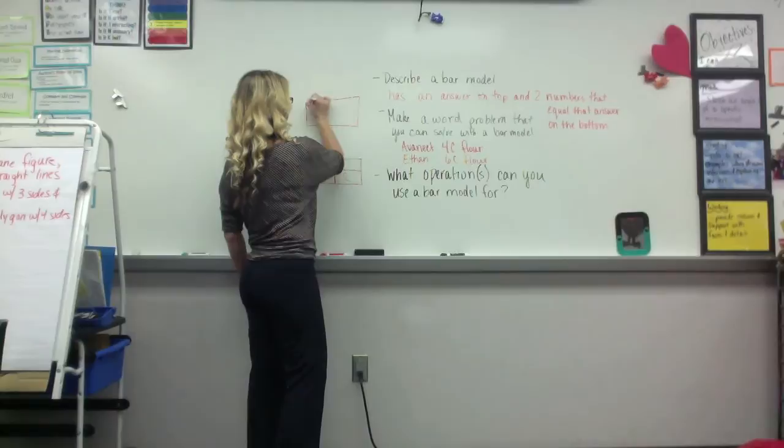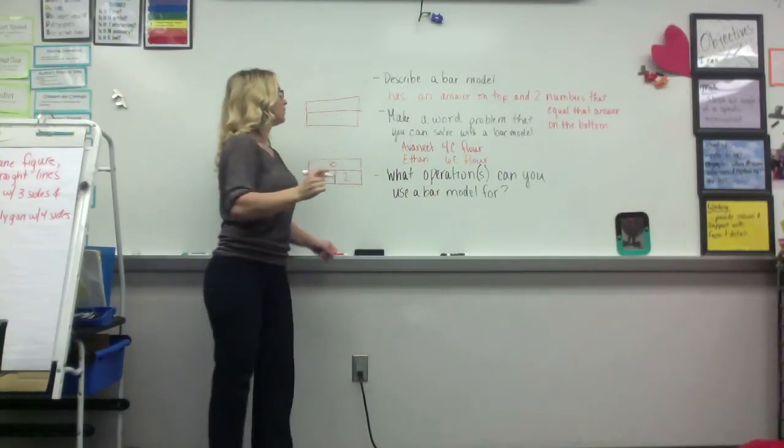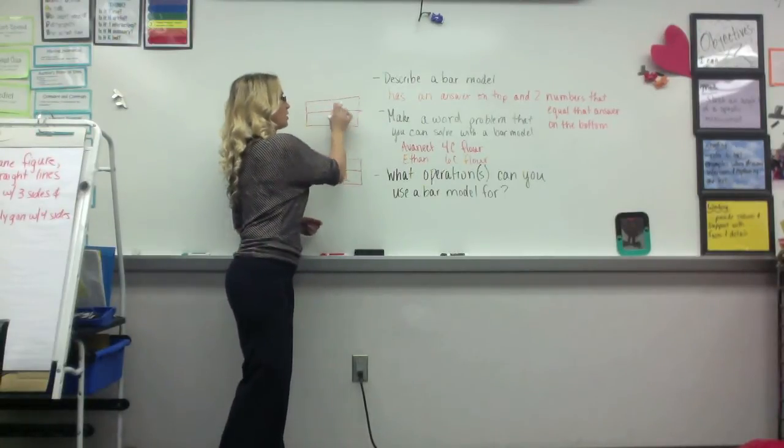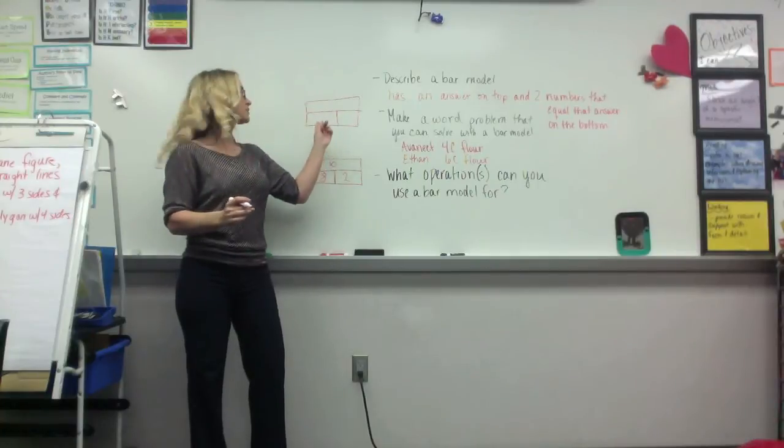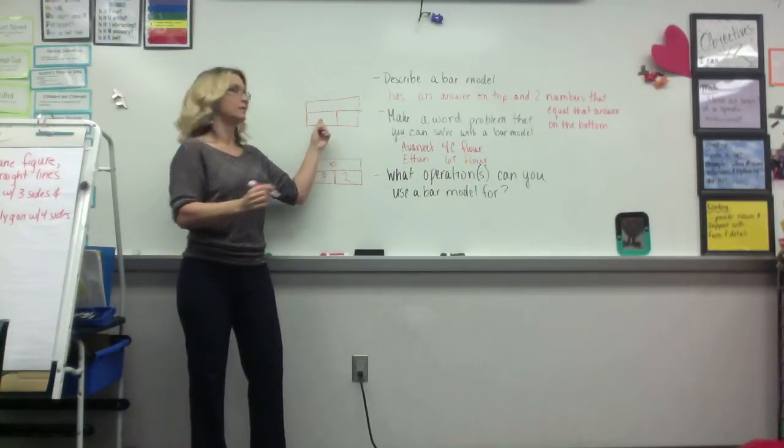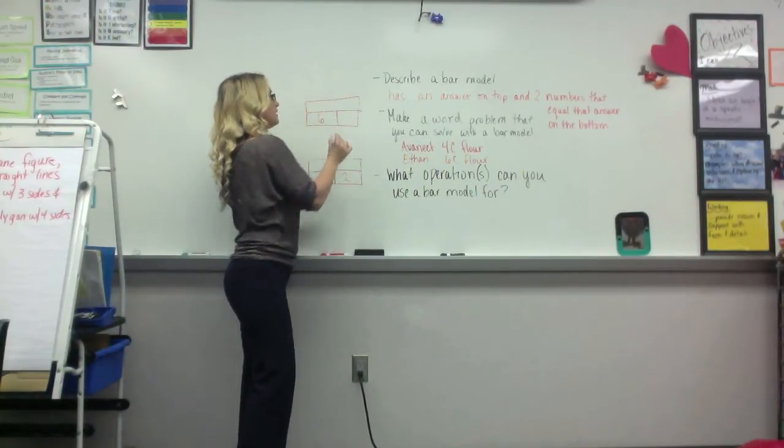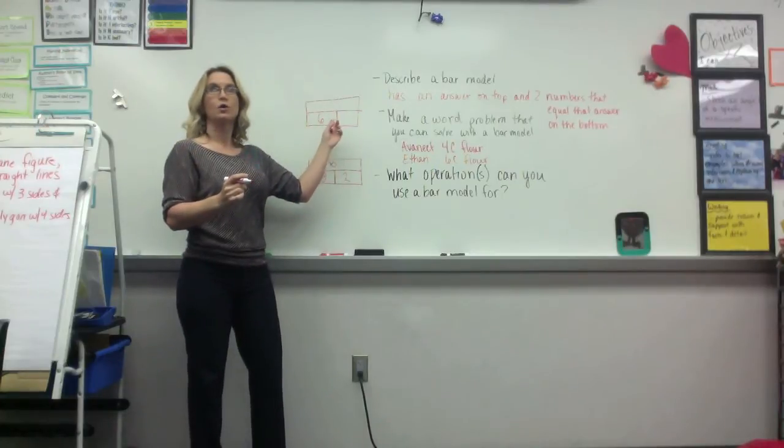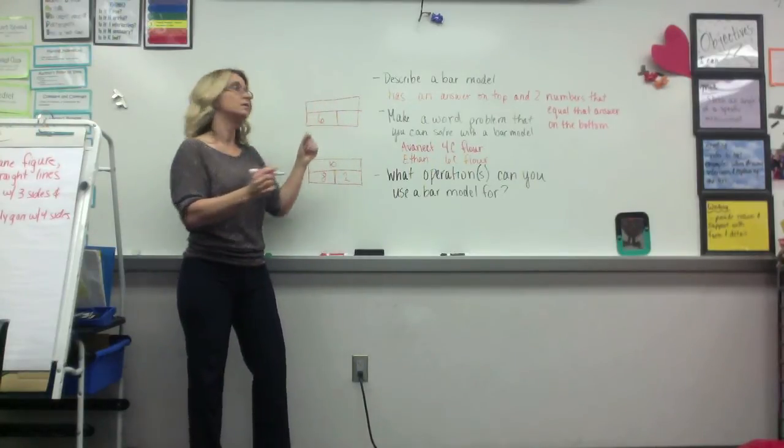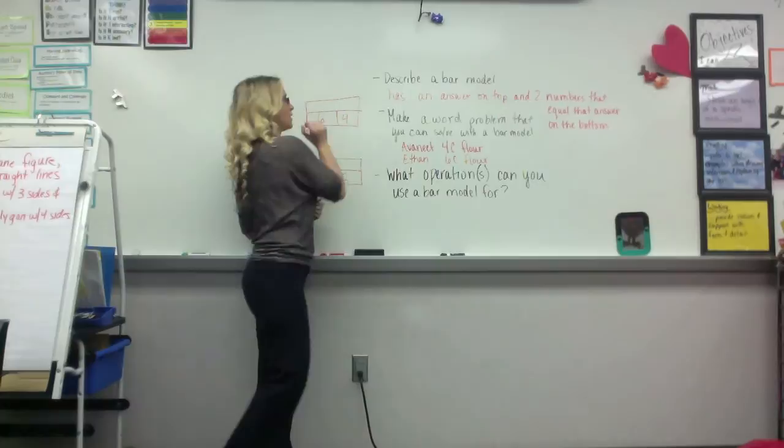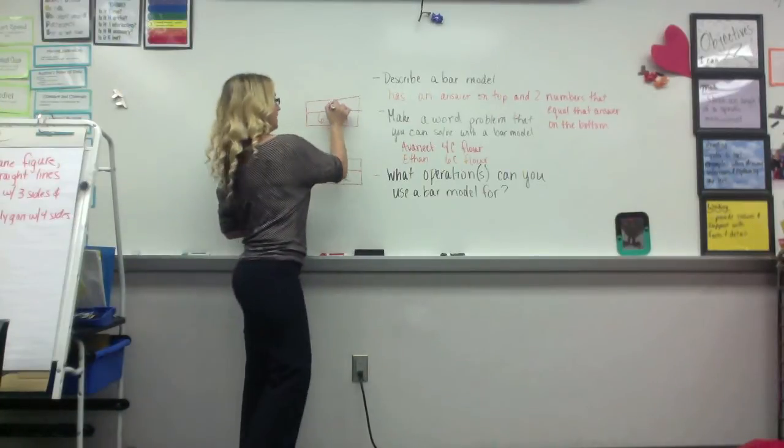So, when I make my bar model, my part, part, whole, what number is going to go down here? Six. Six. Four. Does the four go on the bottom or the top? Bottom. Bottom. And then what goes on the top? Ten. Ten. Okay.